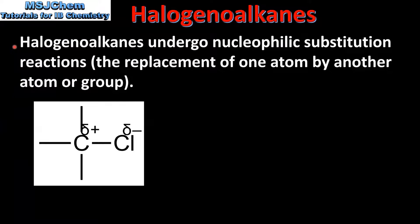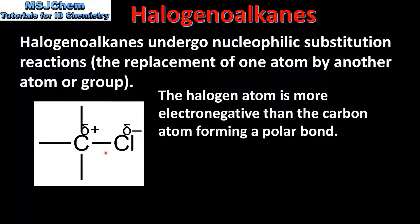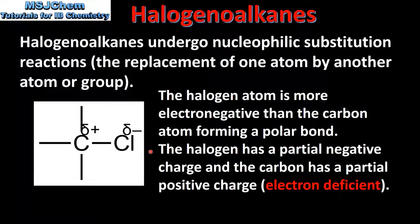Halogenoalkanes undergo nucleophilic substitution reactions. This involves the replacement of one atom by another atom or group. Here we have a carbon to chlorine bond which can be found in a halogenoalkane such as chloromethane. The halogen atom is more electronegative than the carbon atom, which forms a polar bond. The halogen has a partial negative charge and the carbon has a partial positive charge.